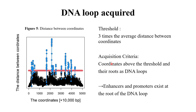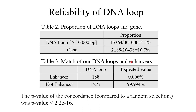Because enhancers and promoters exist at the root of the DNA loop, we validated our selections. We selected 5.1% of the total genome as DNA loops, and furthermore, 5% of human genes were included in that region. This indicated that we have selected very meaningful regions. Furthermore, the positions of enhancers examined in existing studies and the positions of our DNA loops were in significant agreement.